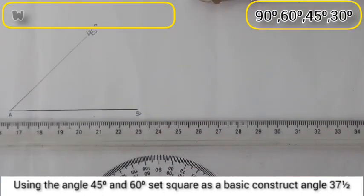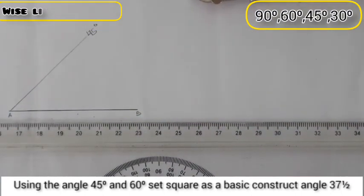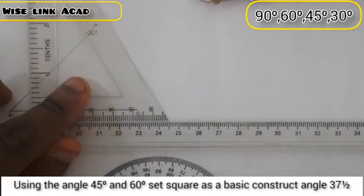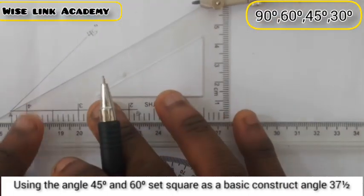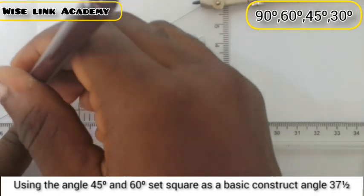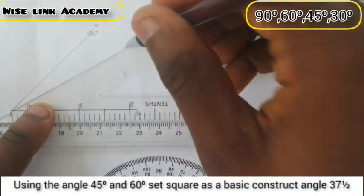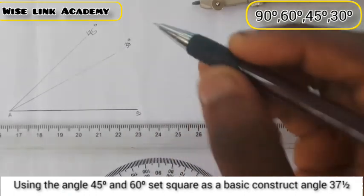Next task is I need to construct 30. I know that if I place my 60 degree set square this way, I get 30 degrees. Point line this way, I get 30 degree.